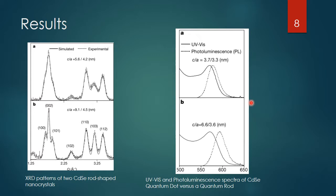On the right are UV-Vis and photoluminescence spectra of cadmium selenide quantum samples. The top one has an aspect ratio close to one, so that would be a quantum dot. The bottom one has an aspect ratio close to two, meaning the C-axis is a lot longer than the A or B axis. One thing to note in these two spectra is the splitting going on between the UV absorption and the photoluminescence.